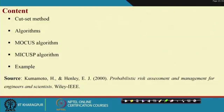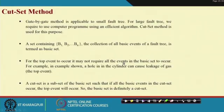The source is the same book — Kumamoto and Henley, 'Probabilistic Risk Assessment and Management for Engineers and Scientists,' published by IEEE Press.